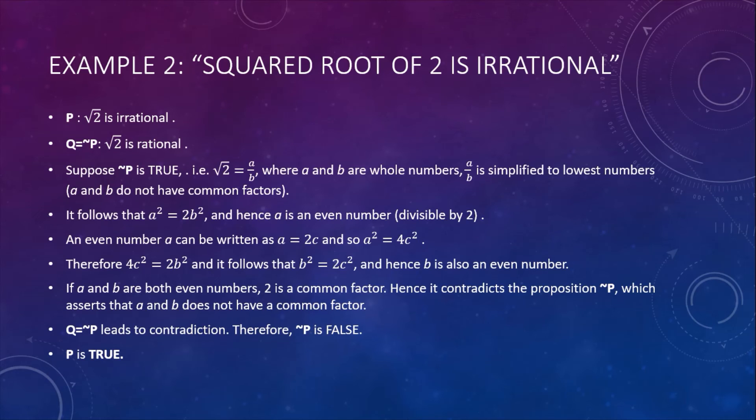So we have both a and b as even numbers, so they do have a common factor—2 is a common factor. That contradicts the proposition that they do not have common factors. So proposition not-P leads to a contradiction. Hence proposition not-P is false, so we must accept that P itself is true. That's all I have to say now. Thanks for watching, bye.